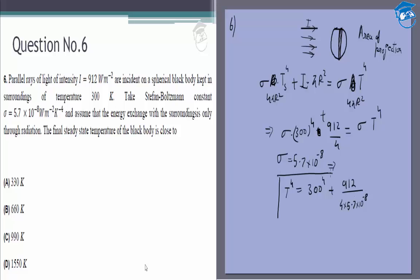To be honest, you don't need to solve it too much because the options are quite far apart: 330K, 660K, 990K, and 1550K. If you solve this, you'll see that the answer comes out to be T = 330K. You can easily look at this and see whether it's 330 or 630—it would be around 330 if you calculate this.